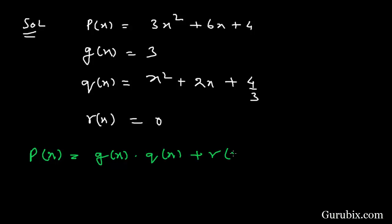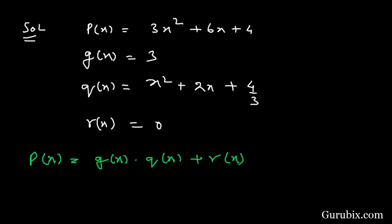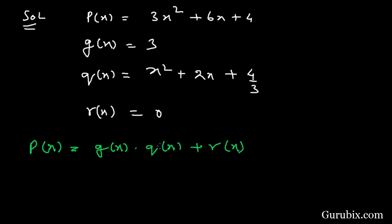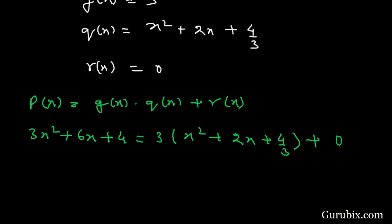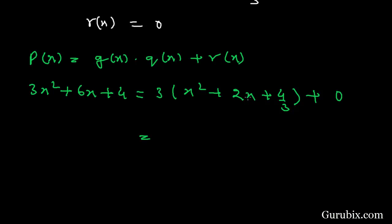We let p(x) = 3x² + 6x + 4, g(x) = 3, q(x) = x² + 2x + 4/3, and r(x) = 0. If we multiply 3 with x² + 2x + 4/3, then we have 3x² + 6x + 4.